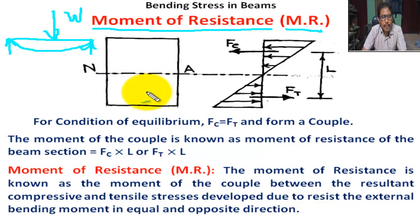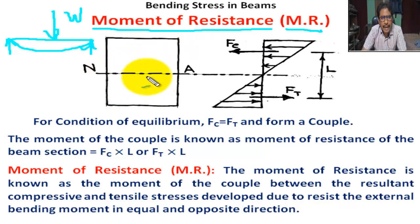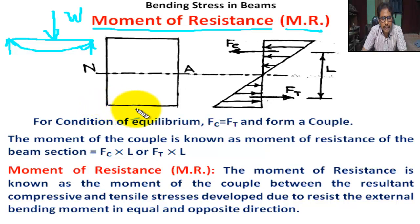Above NA, compressive stress increases gradually. At the topmost layer, there is maximum compressive stress. Below NA, tensile stress increases gradually, and at the bottommost layer, there is maximum tensile stress.